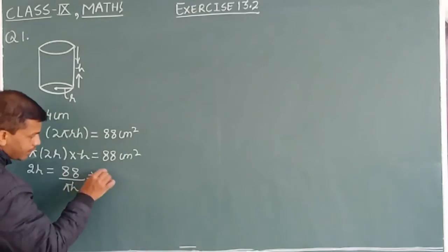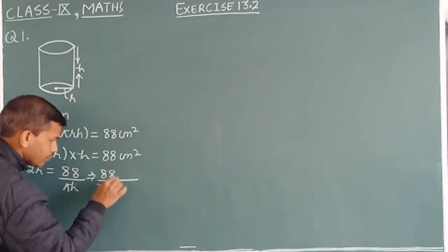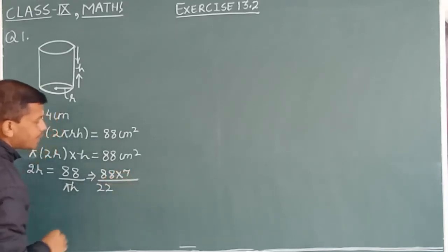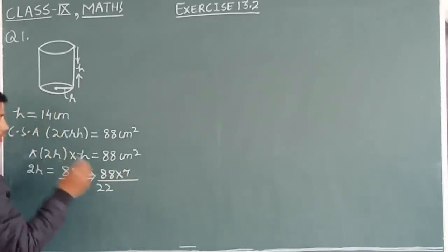This equals to 88, pi equals 22 upon 7, so that 7 we use here and height is 14 centimeter.